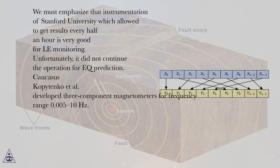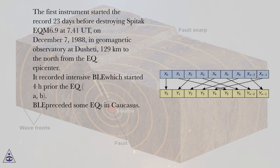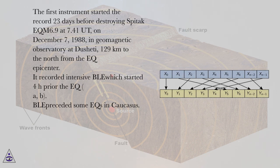Caucasus. Kopytenko et al. developed three component magnetometers for frequency range 0.005 to 10 Hz. The first instrument started the record 23 days before destroying Spitak EQ M6.9 at 7.41 UT, on December 7, 1988, in geomagnetic observatory at Dusheti, 129 kilometers to the north from the EQ epicenter.